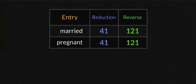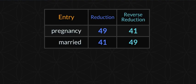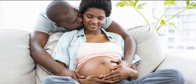Man and woman become a couple, get married — woman becomes pregnant, not always in that order. It's interesting how 'married' and 'pregnant' both equal 41 and 121 in the same ciphers — the reduction cipher. When you reach double digits with the alphabet, add the two digits together to get one digit. And 'pregnancy' syncs up with 'married' — you see the 49 and the 41. Learn gematria, people.